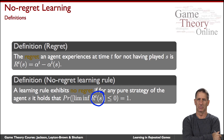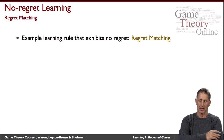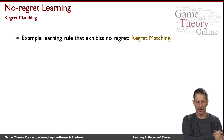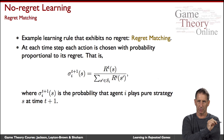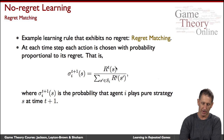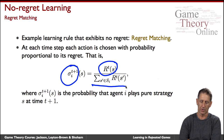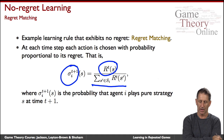A learning rule exhibits no regret if, in the limit, agents do not exhibit any regrets — that is, the probability that the regret tends to zero goes to one. One such rule, surprisingly simple, is called regret matching. It works as follows: look at the regret experienced so far for each pure strategy, and pick the next pure strategy in proportion to its regret. Formally, if R_t(s) is the regret of strategy s at time t, the probability of playing s at the next time step is R_t(s) divided by the sum of all regrets.